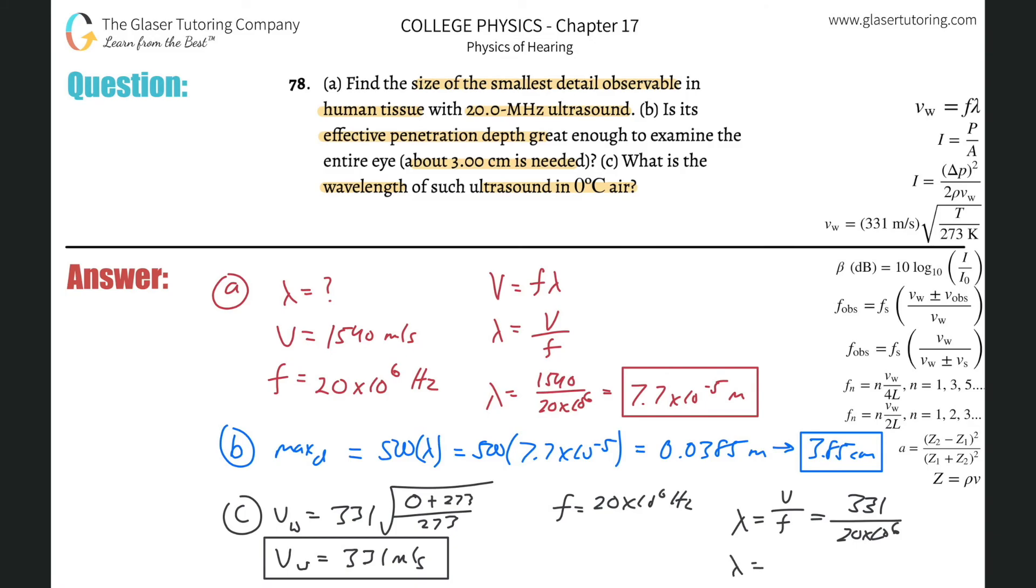And the wavelength here will be 331 divided by 20 times 10 to the sixth: 1.66 times 10 to the minus fifth, and that's in terms of meters.